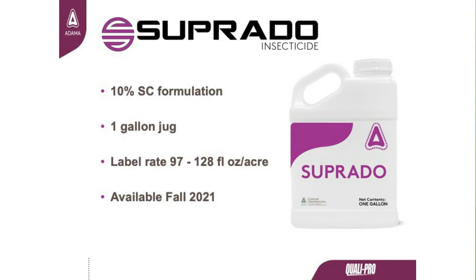We're releasing this product under the name Soprato. The F or flowable version of Novaluron became Soprato — an SC formulation at 10% concentration. The labeled rates for Soprato will be three or four quarts per acre for annual bluegrass weevil, available in a one-gallon jug. We have federal registration and have submitted to states, with approximately 10 states approved already, with more expected in the coming weeks.